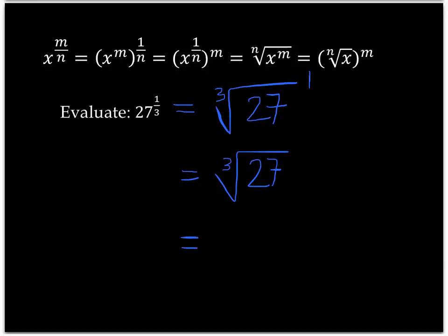So, in fact, this is 3. Since 3 times 3 times 3 gives us 27.